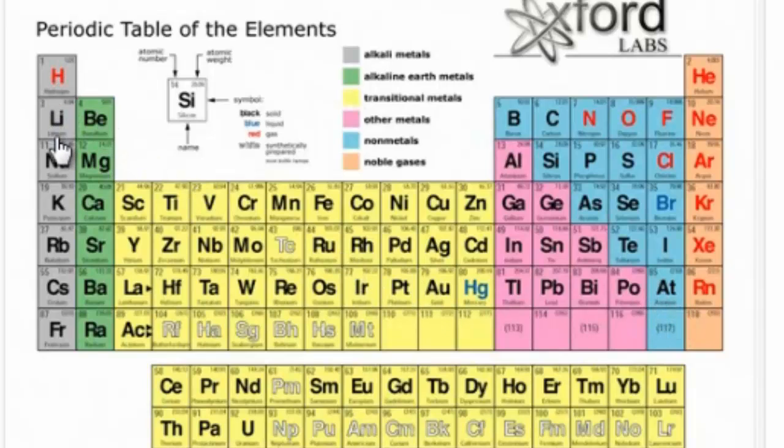The first group, group 1A, are called the alkali metals. And hydrogen, although it is in group 1A, it is not a metal, so it's generally not bundled in as an alkali metal.